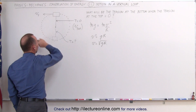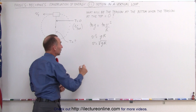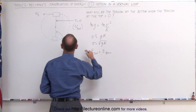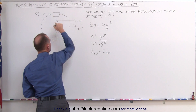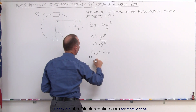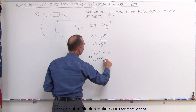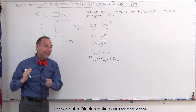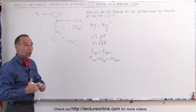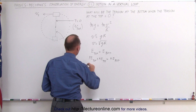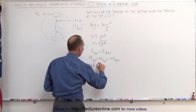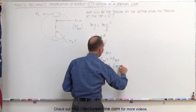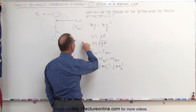Next, we need to find the velocity at the bottom. To do that, we use the energy conservation equation. We can say that the energy at the top must equal the energy at the bottom. The only energy at the top would be potential energy and kinetic energy. So: potential energy at the top, plus kinetic energy at the top, equals kinetic energy at the bottom. We call the bottom the zero height point, so there's no potential energy there. Putting in the equations: mgh plus one-half mv_top² equals one-half mv_bottom². That's what we're looking for — v at the bottom.